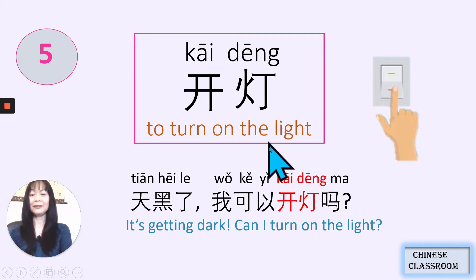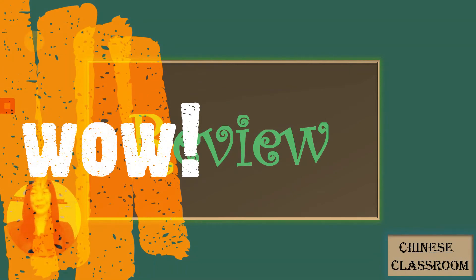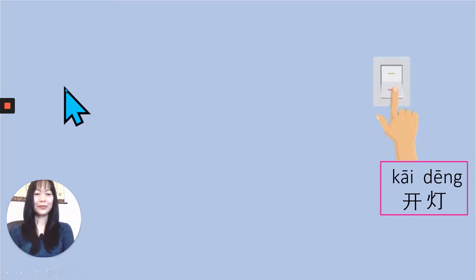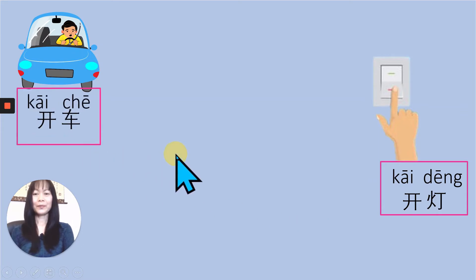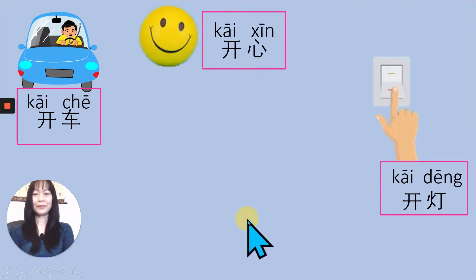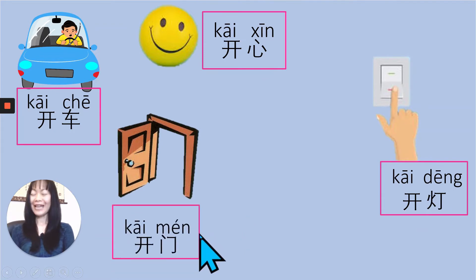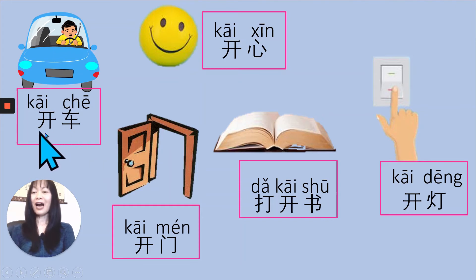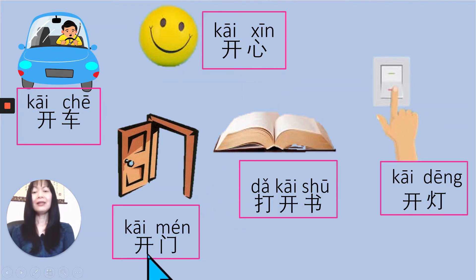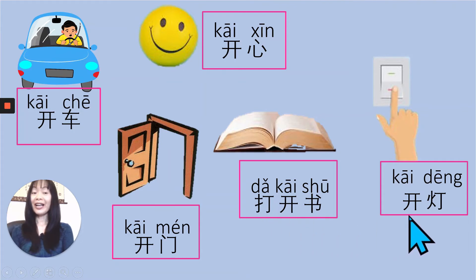开灯, 开灯. So far we have learned 5 different ways to use 开, let's review. 开灯, 开车, 开心, 开门, 打开书. Did you get it right? Please repeat after me: 开车 — drive a car. 开心 — happy. 开门 — open the door. 打开书 — open the book. 开灯 — turn on the light. 非常好, 非常好! I heard that you speak so beautifully.